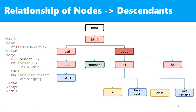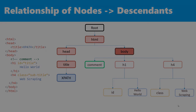For example, the descendants of the body node are all its children — the comment node, the h1 node, and the h4 node — including the children of the h1 node and the h4 node. So this was a quick introduction to XPath terminology. In the next lectures, we will dig into the XPath syntax. Let's do this.